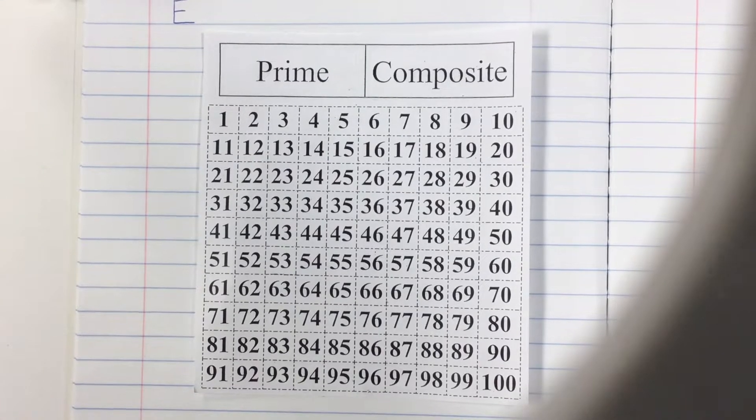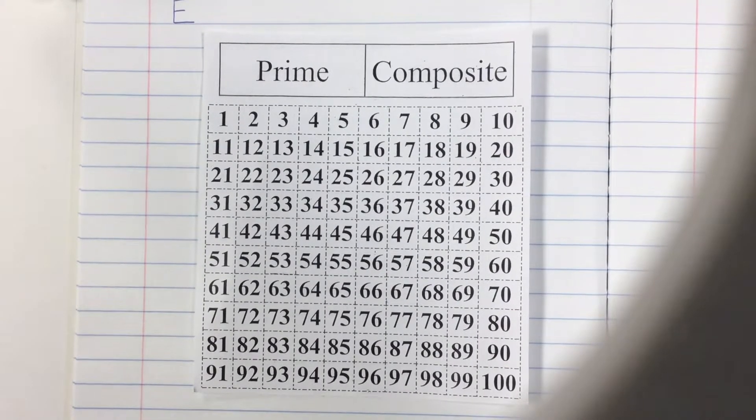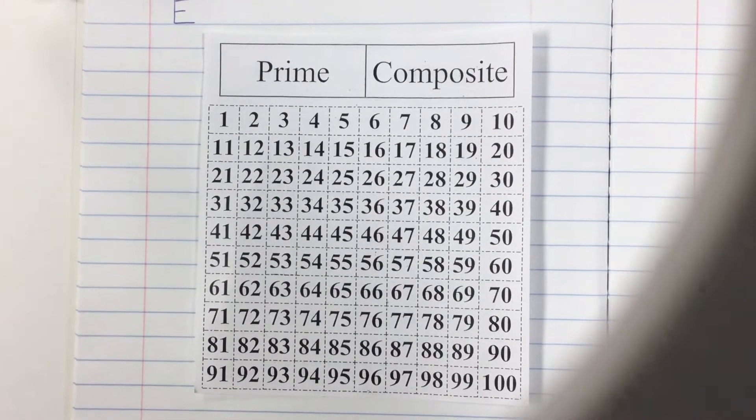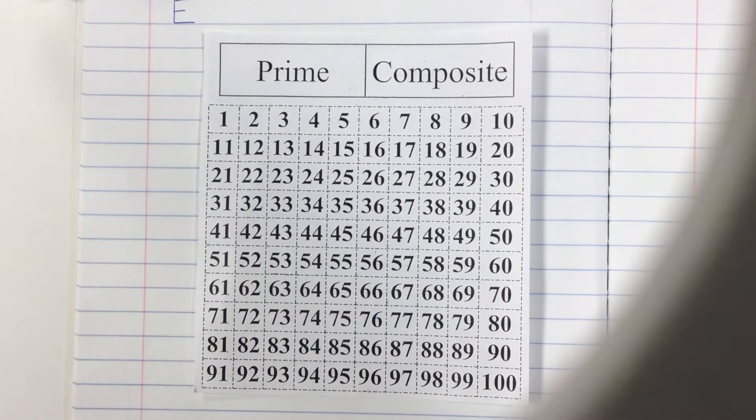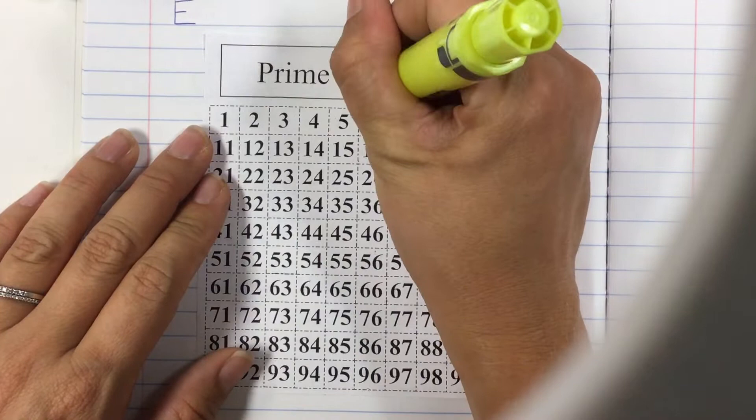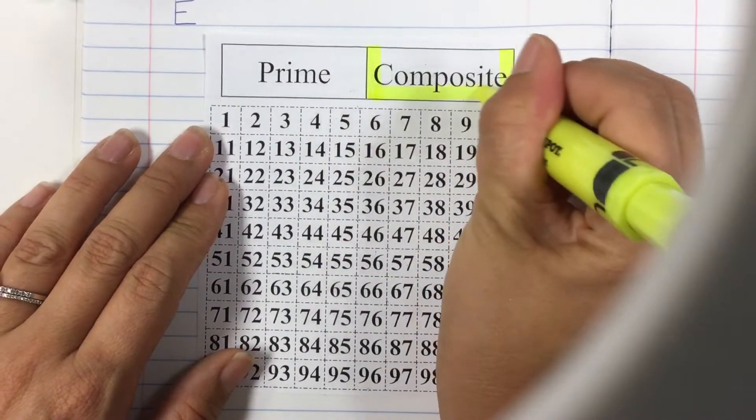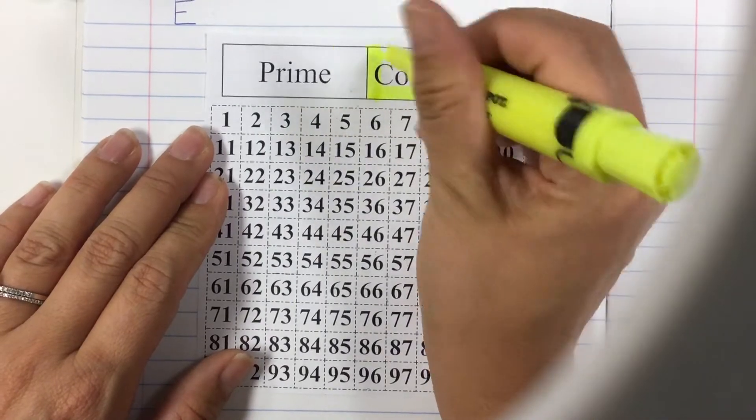We will be completing the sieve of Eratosthenes to discover where prime numbers are. The first thing I want you to do is find three colors. Highlighters work best but markers are fine as well. Then determine what colors you want to be your prime color and your composite number color, and you're going to have an extra color for a very special number.